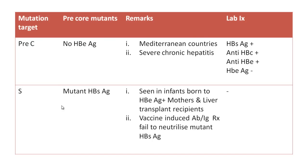Sometimes the coding regions in these genes get mutated, leading to abnormal antigenic structures. If the pre-C region is the mutation target, we get the pre-core mutant, which does not produce normally coded hepatitis B antigen. This is usually found in persons suffering from very severe chronic hepatitis, typically in Mediterranean countries. If the S coding region is mutated, we get a mutant hepatitis B surface antigen, which is common in infants born to HBsAg-positive mothers or in liver transplant recipients.